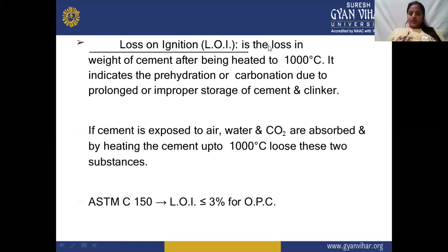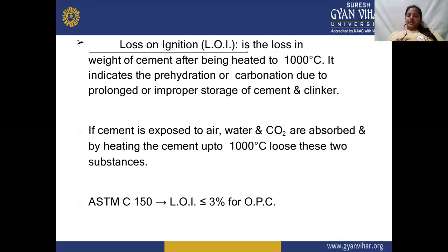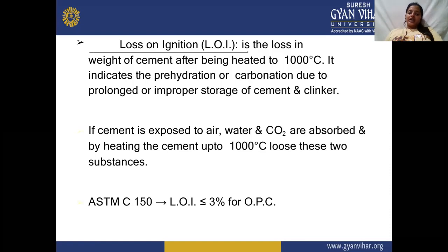Loss of ignition is the loss in weight of cement after being heated to 1000 degrees Celsius. It indicates pre-hydration and carbonation due to prolonged or improper storage of cement. A lot of chemicals and compounds are released as gases during heating, causing a decrease in weight. If cement is exposed to air, water and carbon dioxide are absorbed, and by heating the cement these substances are lost. As per ASTM, loss of ignition should be kept at less than or equal to 3% for OPC.